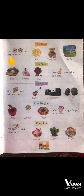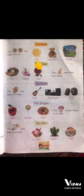Our Eyes Help Us To See — jo humari aankhe hain woh dekhne mein humari help karti hain. For example: first one is Sun — hum humari aankhon se sun ko dekh sakte hain. Second is Teddy Bear. Third is Garden — hum humari aankhon se sun, teddy bear, aur garden ko dekh sakte hain.